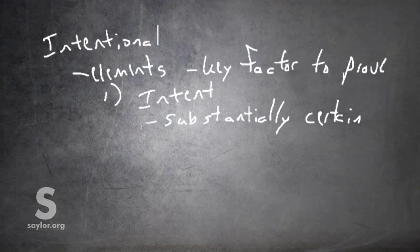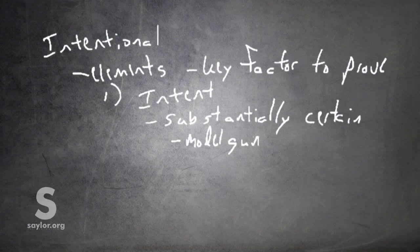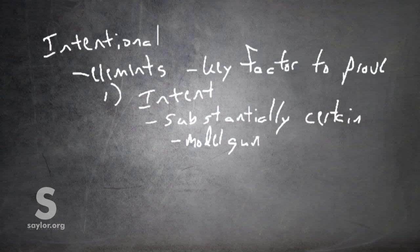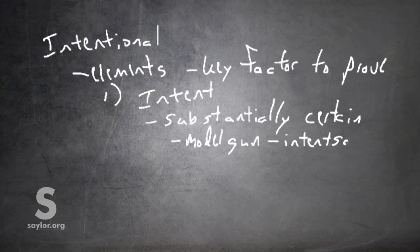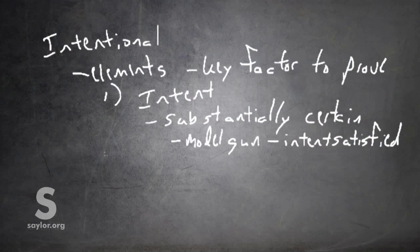So, for instance, pointing a harmless model gun at somebody that looks exactly like a real gun to a person who doesn't know it, doesn't know that it's merely a model, the intent element is satisfied. Because, in this case, we would probably be talking about the tort of assault, which only requires putting the other person in apprehension of harm.